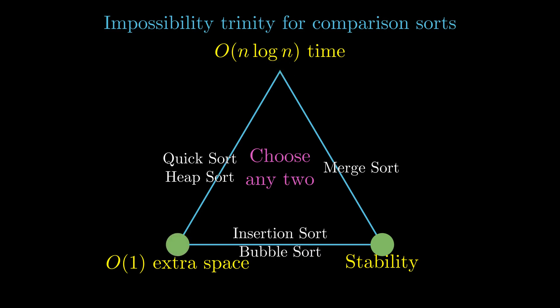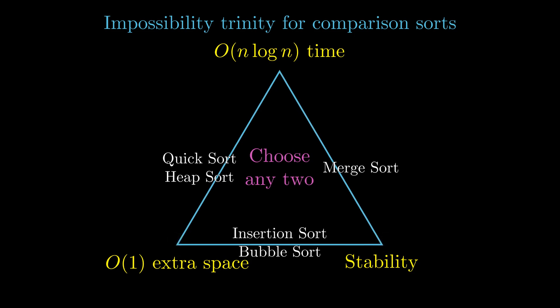Finally, insertion sort and bubble sort are O(n²) algorithms. Since they compromise on speed, they can get the work done in O(1) extra space, and at the same time, they are stable algorithms as well.